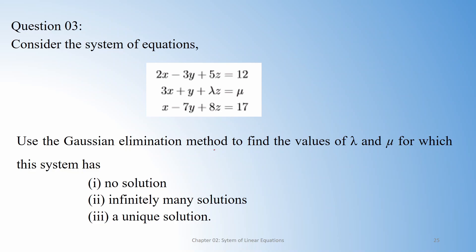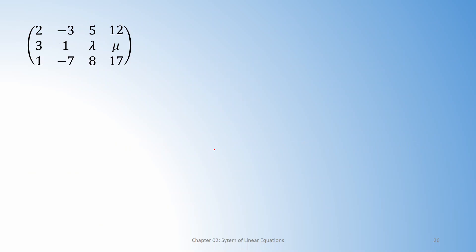Consider the linear system: 2x minus 3y plus 5z equals 12; 3x plus y plus lambda z equals mu; x minus 7y plus 8z equals 17. In this system, lambda and mu are constants. The question asks us to use Gaussian elimination to find the values of lambda and mu for which the system has no solution, infinitely many solutions, or a unique solution. We start with the augmented matrix. To get a pivot of 1 in the first column, we interchange row 1 and row 3.